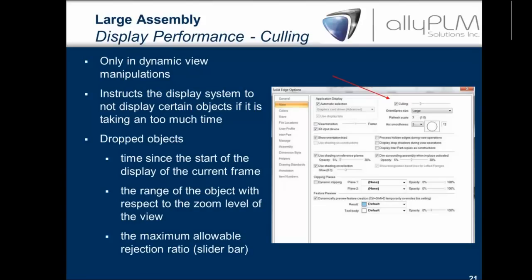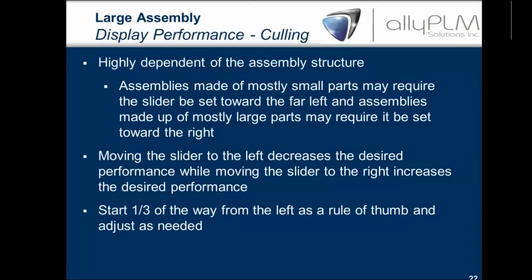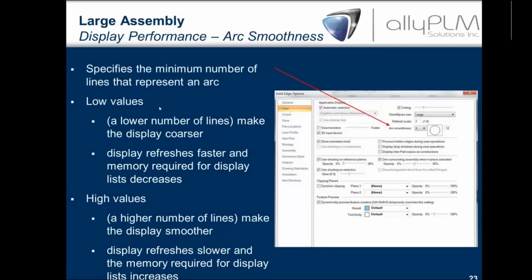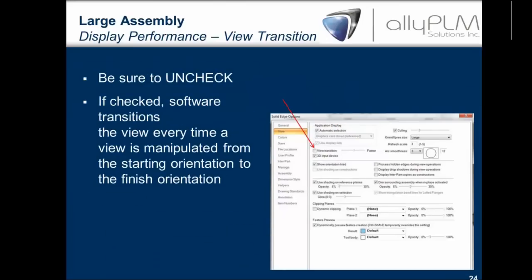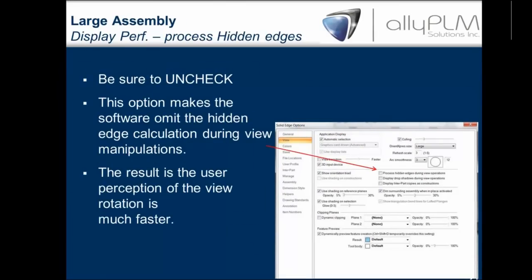Because culling is highly dependent on assembly structure, assemblies made mostly of small parts may require the slider set toward the far left, and assemblies made mostly of large parts may require it set to the far right. In general, moving left decreases performance because it's displaying more, and moving right increases performance. Arc smoothness specifies the minimum number of lines that represent an arc — lower values make the display coarser but refresh faster and decrease memory required. Also, unchecking hidden edges makes the software omit the hidden edge calculation during the view, resulting in the user perceiving that things are moving faster when manipulating views.